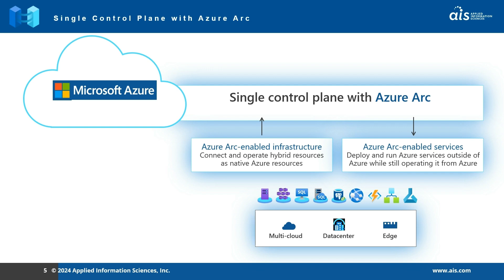First, let's talk about Azure Arc-enabled infrastructure. With Azure Arc, you can seamlessly connect and operate hybrid resources like native Azure resources. Whether it's a multi-cloud environment, on-premise data center, or even edge locations, Azure Arc simplifies complex hybrid operations. It brings the robustness of Azure to your local environment.